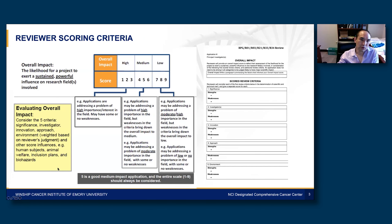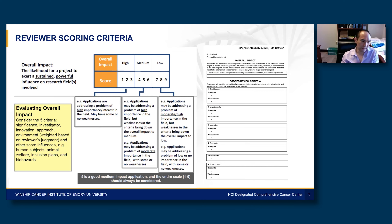These are reviewer scoring criteria, given directly to us by the SRO — the scientific research officer. Basically what we're trying to come up with is an overall impact score: the likelihood of the grant to exert a sustained, powerful influence on the research field. Your grant is scored on a one-to-nine scale, one being the highest, nine being the lowest. Grants scored one have essentially no weaknesses, whereas four, five, six have a mixture of strengths and weaknesses, and those in the low range — seven to nine — have mostly weaknesses. We consider five review criteria: significance, innovation, investigator, approach, and environment, and it's really up to the discretion of the reviewer to weight these different factors.